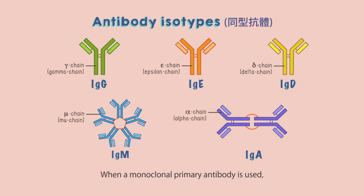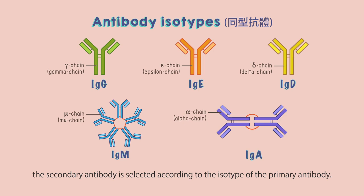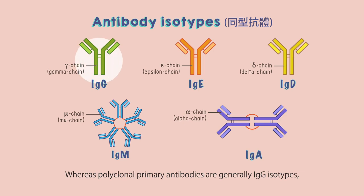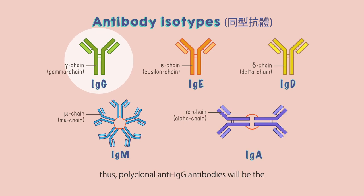When a monoclonal primary antibody is used, the secondary antibody is selected according to the isotype of the primary antibody. Whereas polyclonal primary antibodies are generally IgG isotypes. Thus, polyclonal anti-IgG antibodies will be the ideal secondary antibodies under such conditions.